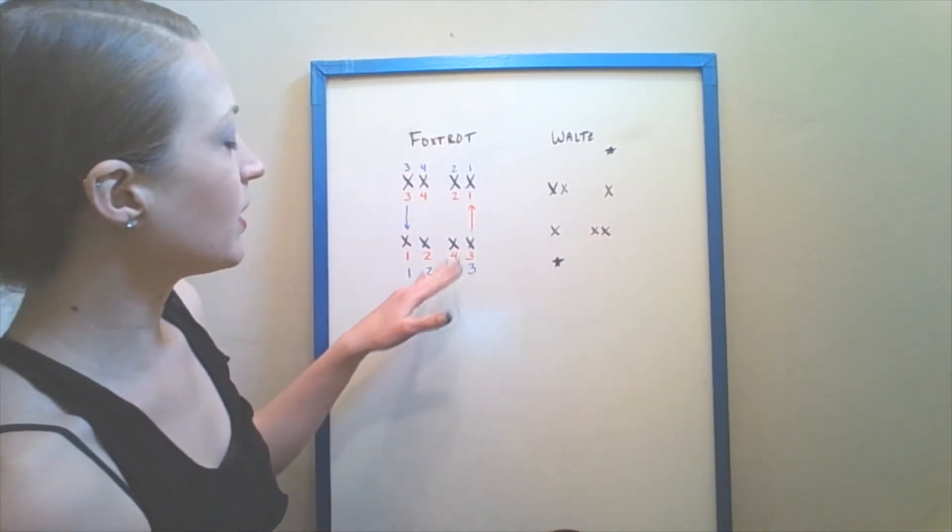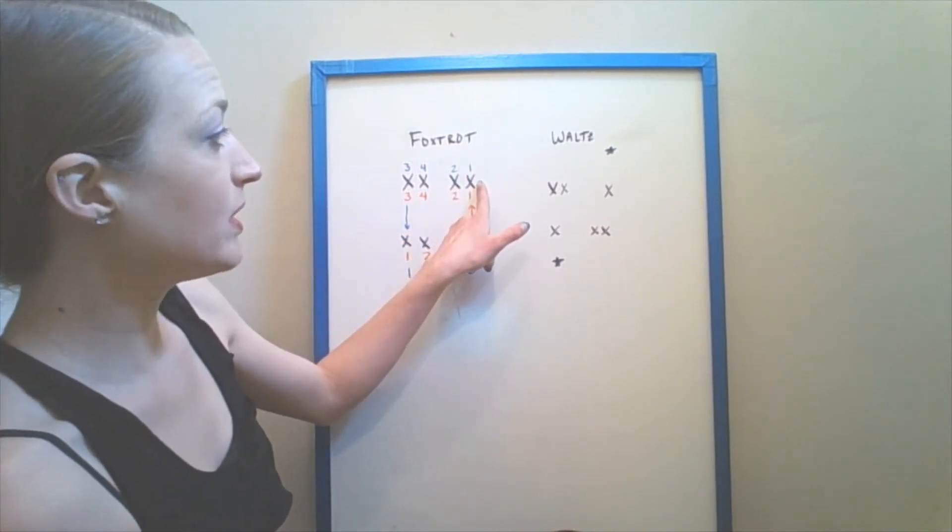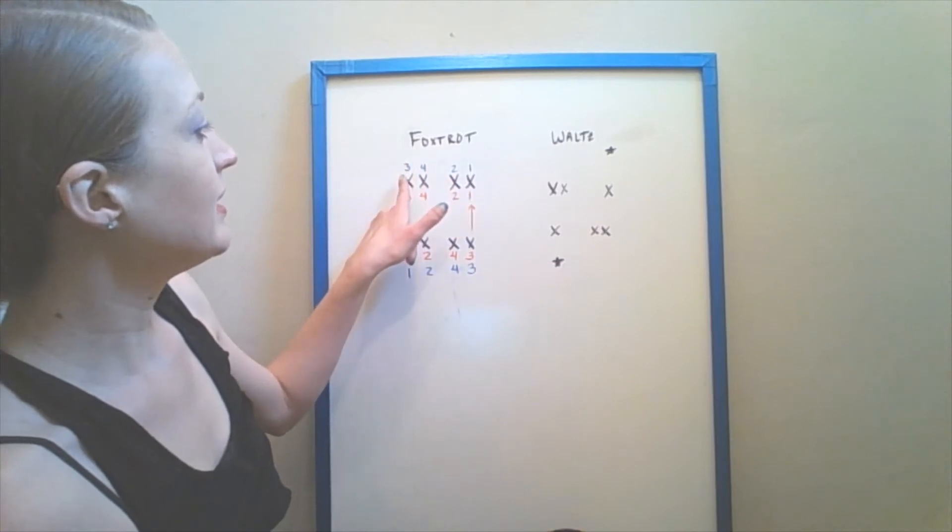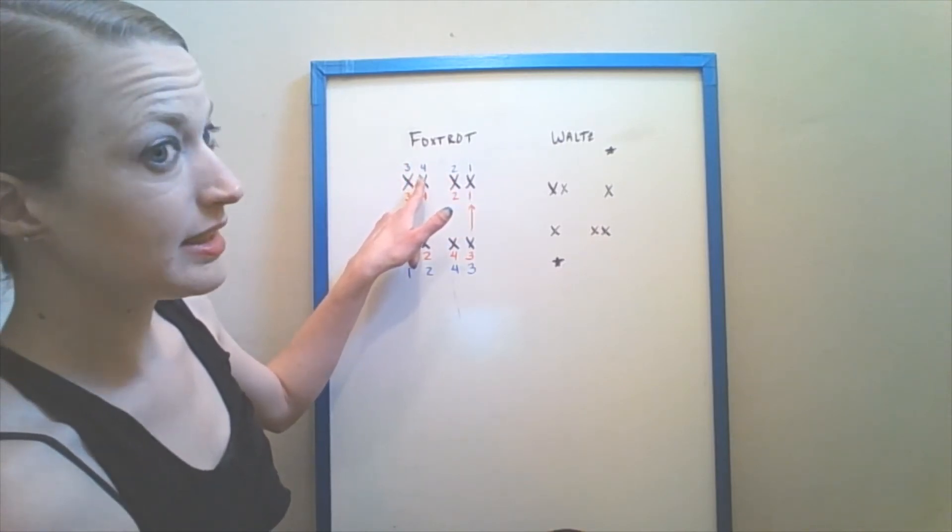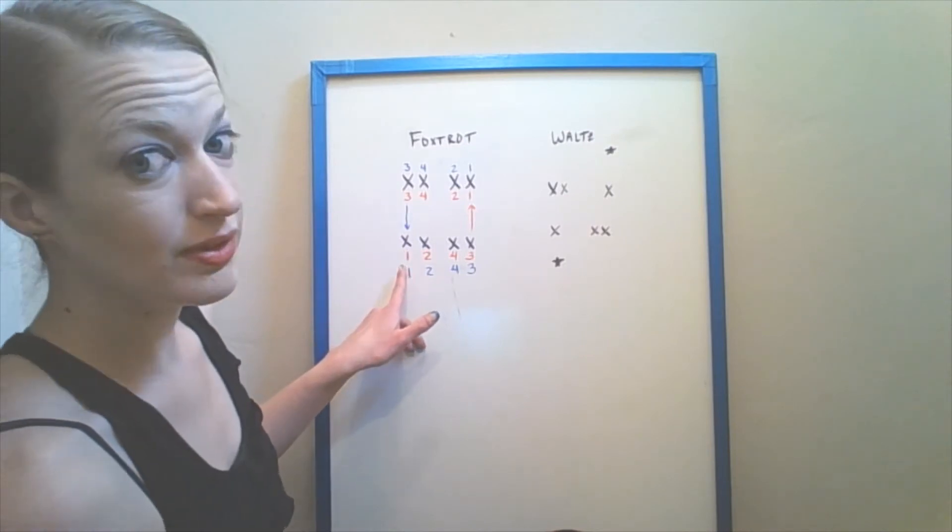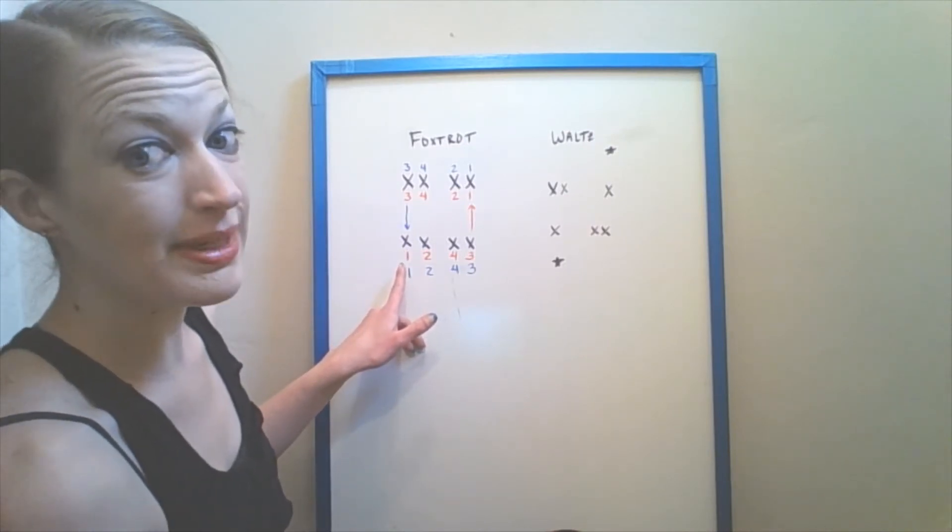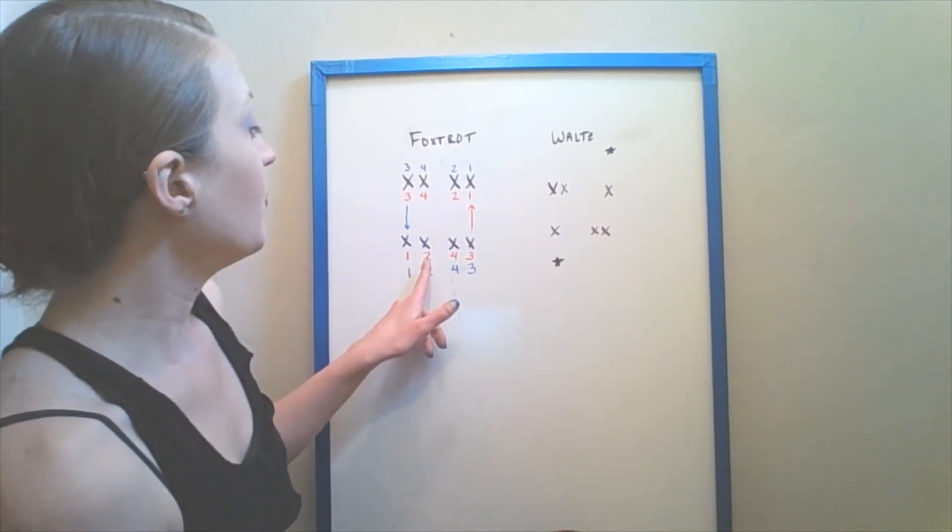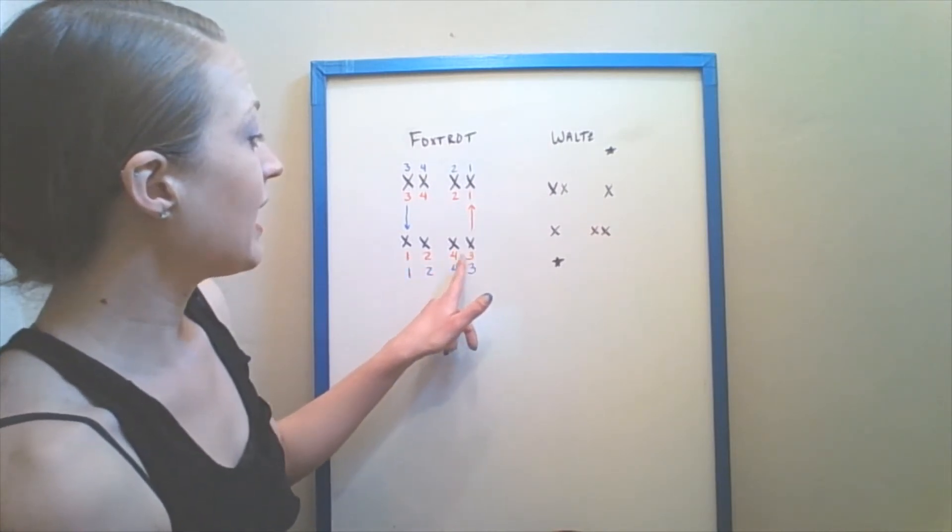Our follower moves in reverse. So we would step backwards on our right foot together with our left, side three, bring our right foot in together on four. We step backwards with our left foot now. So instead of going forwards like we did for our box step, now we're moving backwards with our left foot. We step together, side and together.